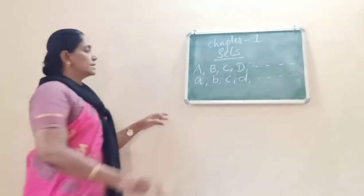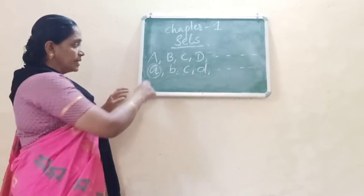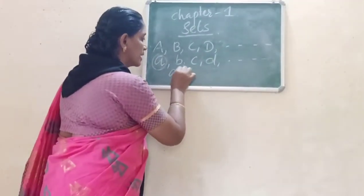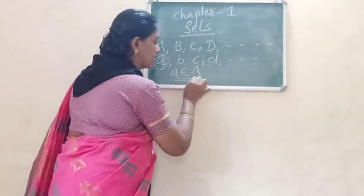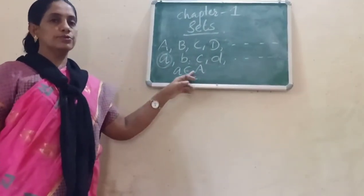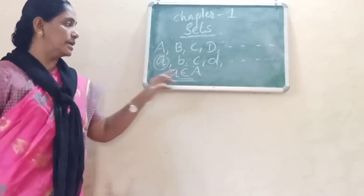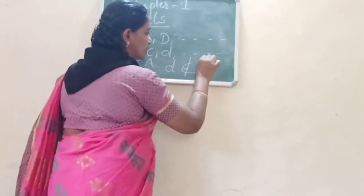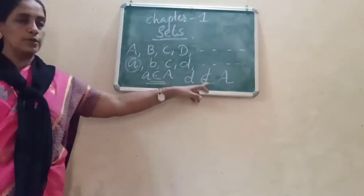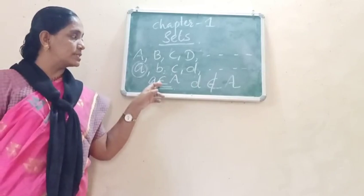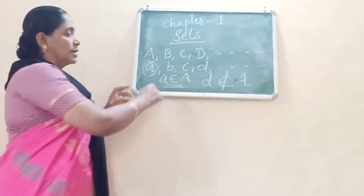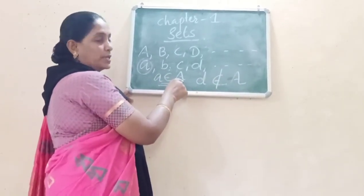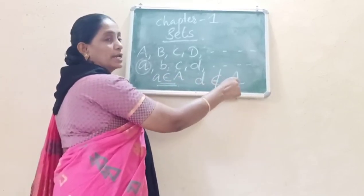Consider: small a is an element of set A. How to write that symbol? The Greek symbol means 'belongs to.' So a belongs to A, meaning a is an element of A. Then d is not an element of A, meaning d does not belong to A. These two symbols — belongs to and not belongs to — come from Greek. So a ∈ A and d ∉ A.